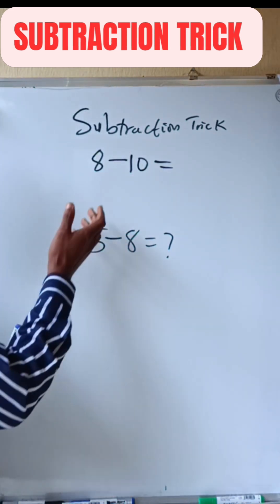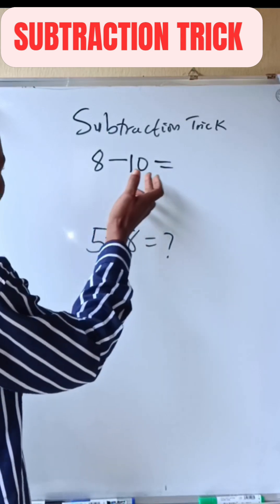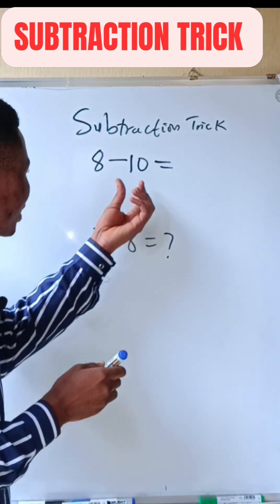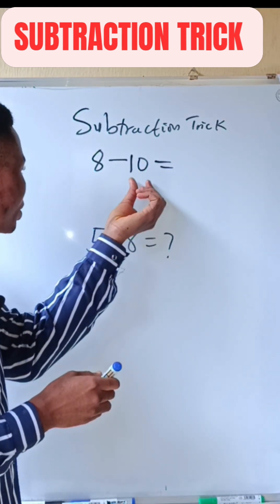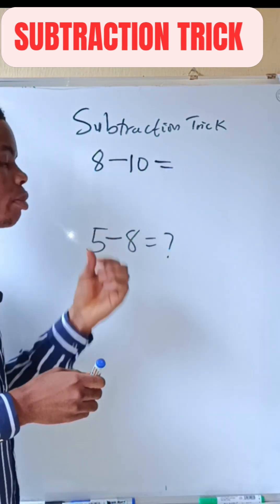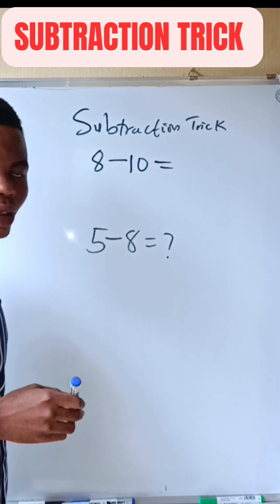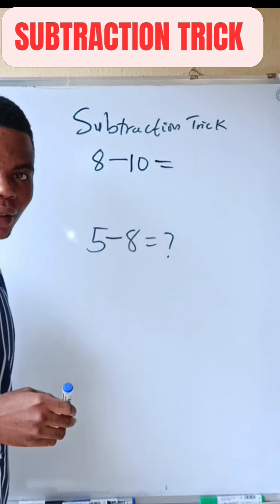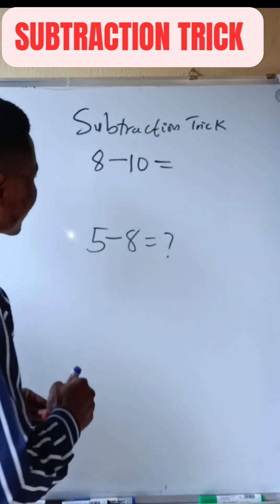So we have the first problem: 8 minus 10. You subtract 10 from 8. So 10 is bigger than 8. So what do we do?